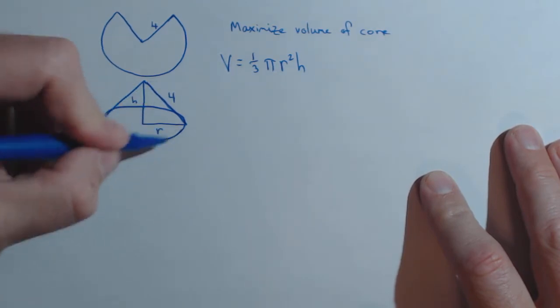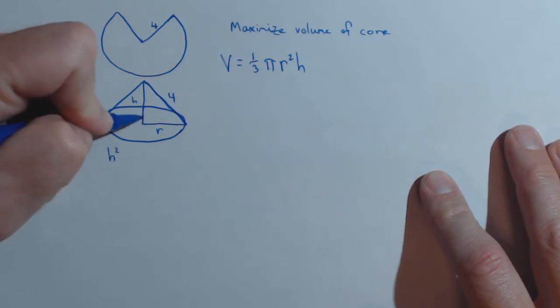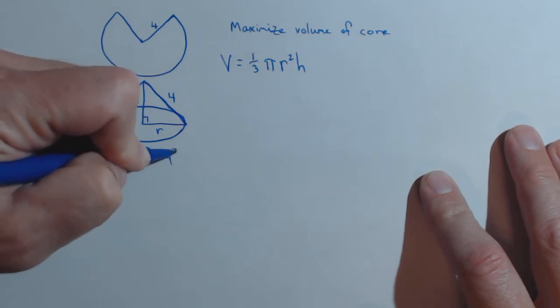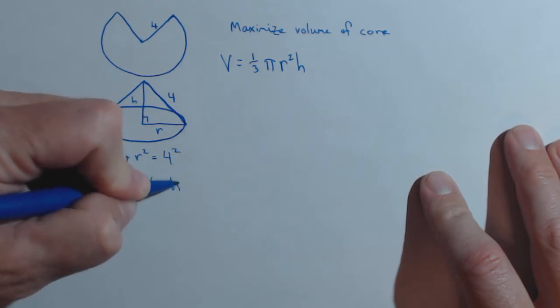we see a nice little Pythagorean identity, that h squared plus r squared equals 4 squared, or that r squared equals 16 minus h squared.